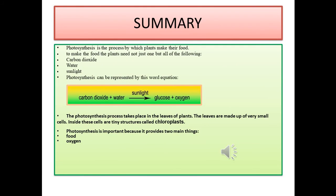Summary: Photosynthesis is the process by which plants make their food. To make food, plants need carbon dioxide, water, and sunlight. Photosynthesis can be represented by a word equation. The photosynthesis process takes place in the leaves, which are made up of very small cells. Inside these cells are tiny structures called chloroplasts. Photosynthesis is important because it provides two main things: food and oxygen.